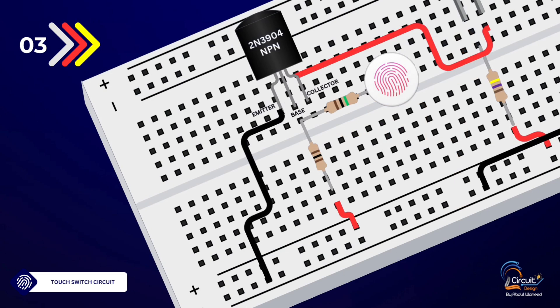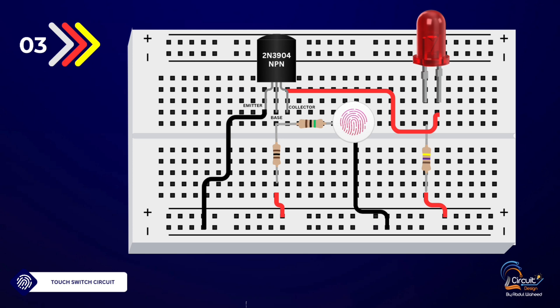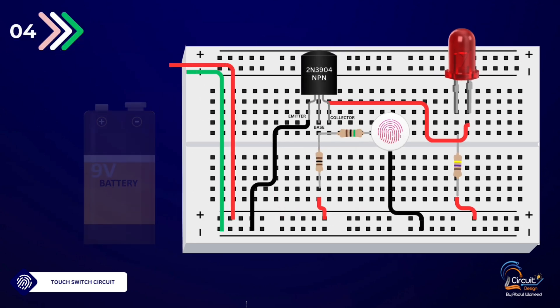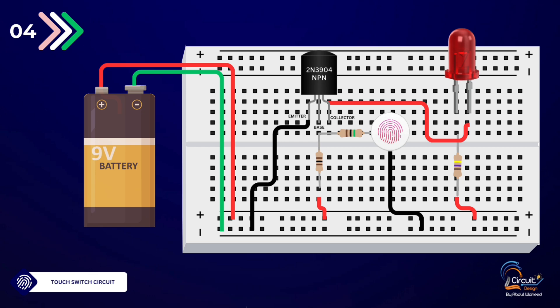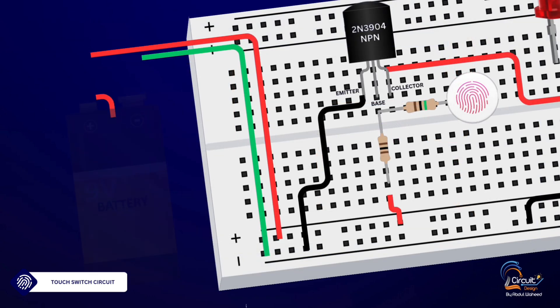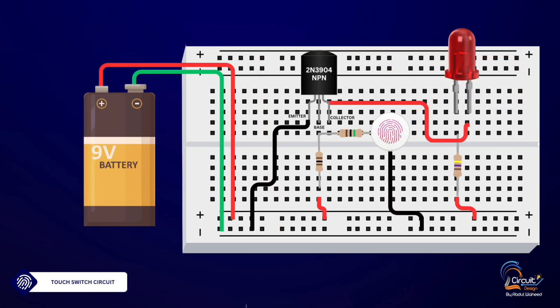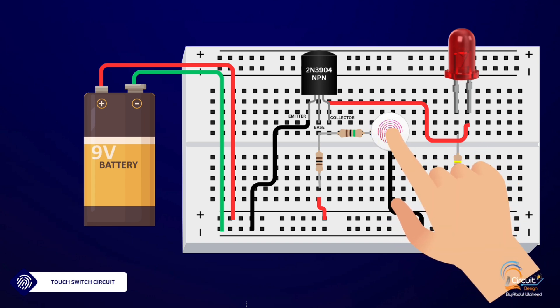Step 5: Completing the circuit. Connect the emitter (E) of the transistor to the negative rail (GND) of the breadboard. Finally, connect your power supply. Attach the positive terminal to the positive rail (VCC) and the negative terminal to the negative rail (GND).